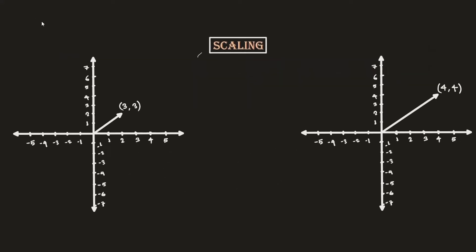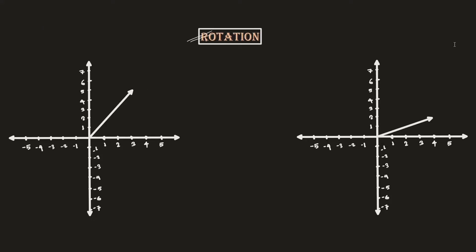Scaling is one type of transformation. Consider a vector pointing towards three points on the x-axis and three points on the y-axis. If we scale it up, it will be transformed to a larger vector. It is not changing its direction — it is just being increased in magnitude.